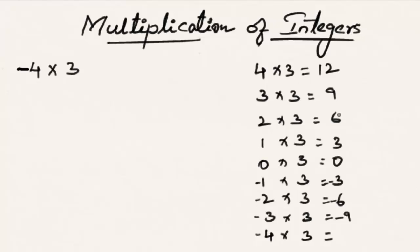Here the multiplier goes 4, 3, 2, 1 and the product is also decreasing by 3 — that is 12, then 9, then 6, then 3, and so on. From this observation we can say that minus 4 multiplied by 3 is nothing but minus 9 reduced by 3, that is minus 12. Hence minus 4 multiplied by 3 is minus 12.